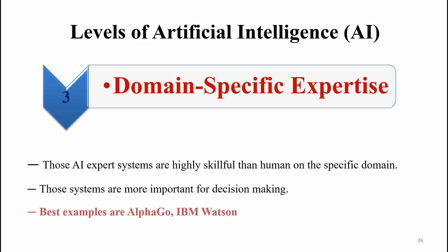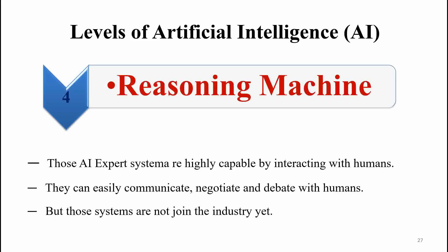The next level is reasoning machines. Those expert systems are highly capable of interacting with humans. They can communicate together, negotiate together, and debate together with humans. Those systems can easily communicate, negotiate, and debate with humans. However, those systems are not yet fully in the industry.